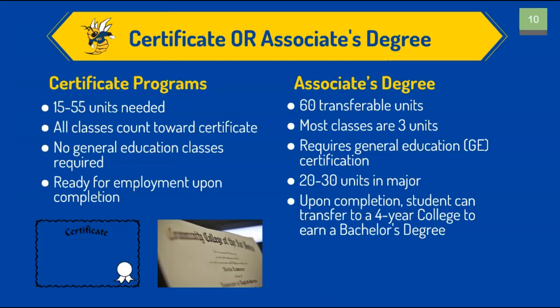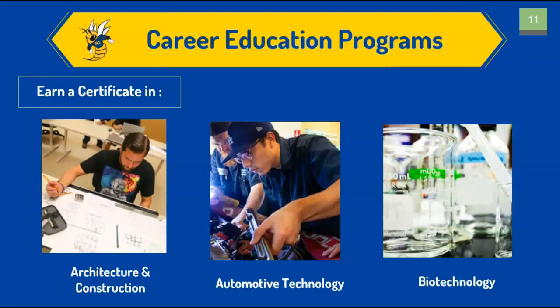A certificate or associate's degree — the certificate programs are shorter usually, 15 to 55 units needed for those. All of the classes count towards the certificate; you don't have to take general ed classes. You're ready for employment upon completion of that certificate. The associate's degree is designed for transfer to the university — you're on your path to a bachelor's degree. For those students who aren't sure college is where they want to go, completing a certificate that prepares you for the workforce is amazing. You can always come back and finish your education. If you have to work during college, why not work in your field and get that experience?